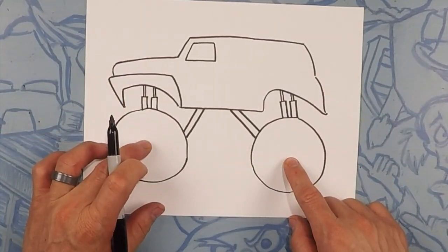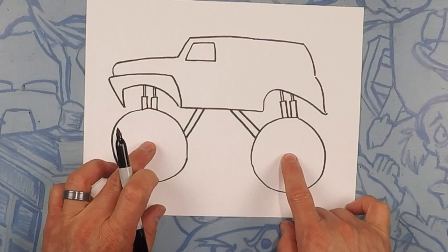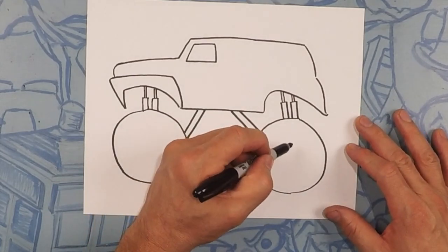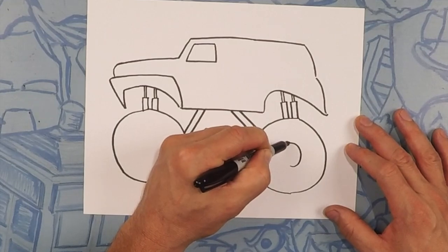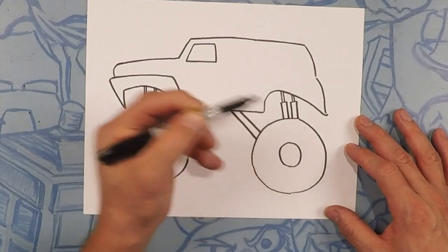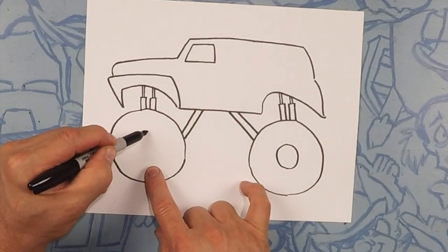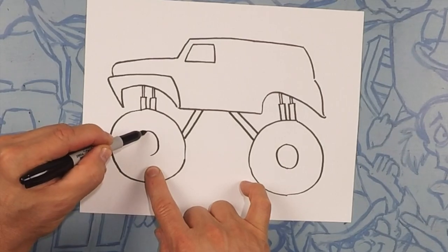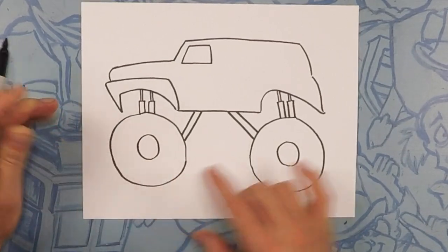Okay so for the center of these circles let's do one more circle in the middle to be the hubcap. Perfect and perfect.